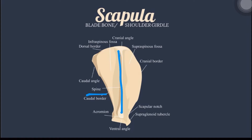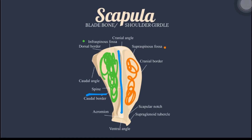It has a prominent spine running down the lateral surface, dividing it into the infraspinous fossa and the supraspinous fossa. On the distal end of the spine is the acromion. The glenoid cavity is a shallow articular socket where it forms the shoulder joint with the head of the humerus.